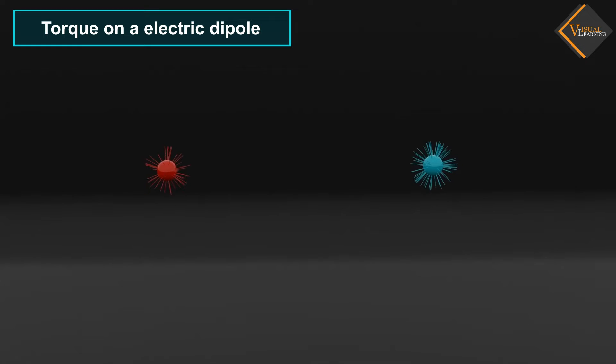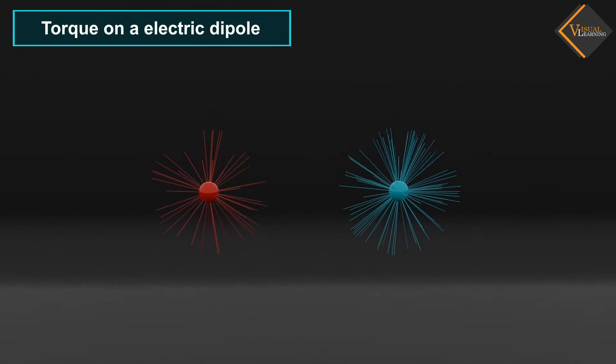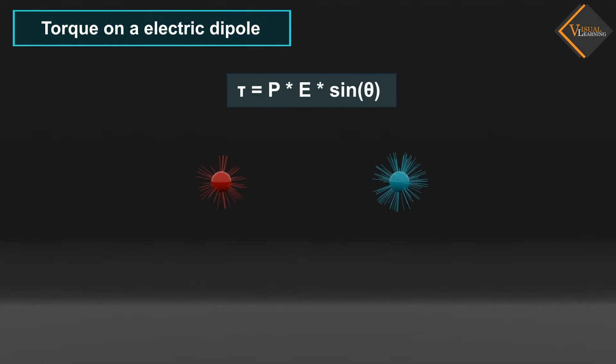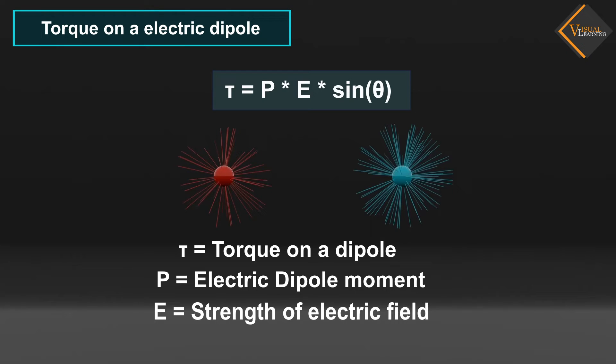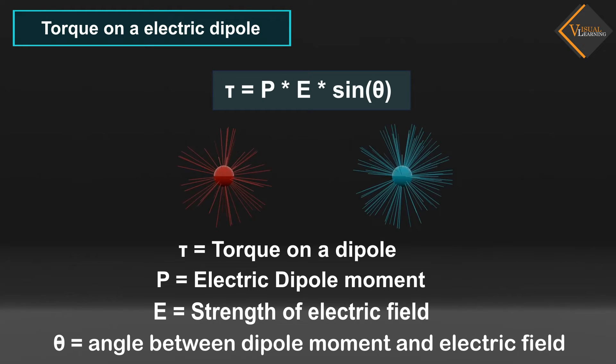The torque acting on an electric dipole can be represented as follows. Tau is equal to P E sin theta. Here, tau is the torque on the dipole, P is the electric dipole moment, E is the strength of the electric field, and theta is the angle between the dipole moment and the electric field.